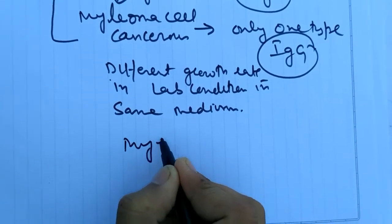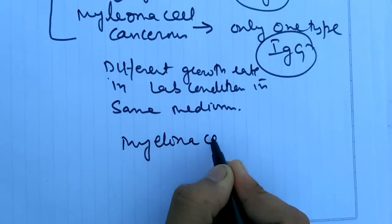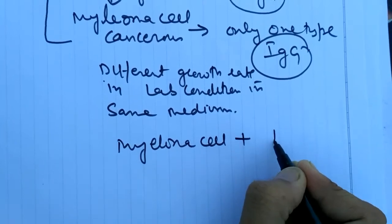Here we fuse both types of cells, that is myeloma cell plus plasma cell.